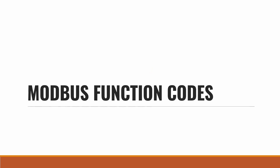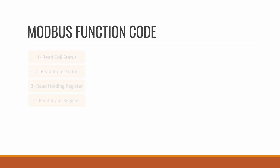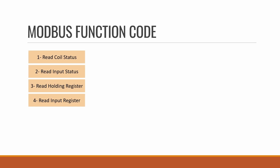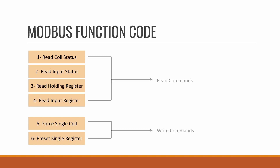Now, the Modbus function codes. Function codes are like commands used in Modbus communication. There are six Modbus function codes: the first four are reading commands and the last two are writing commands. Function code 1 is for read coil status, function code 2 for read input status, function code 3 to read holding register, and function code 4 to read input register. Function code 5 is for forcing a single coil, and function code 6 is to reset a single register.